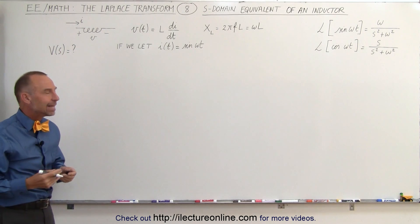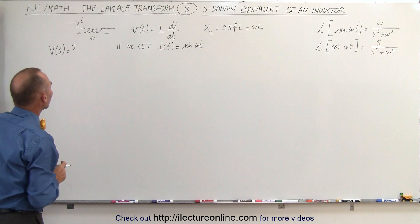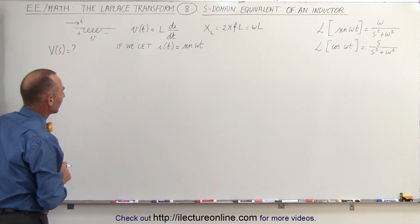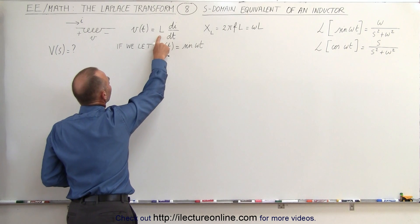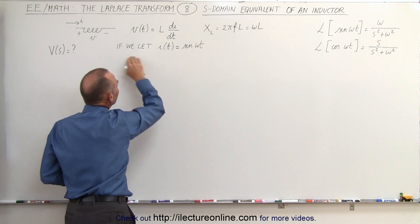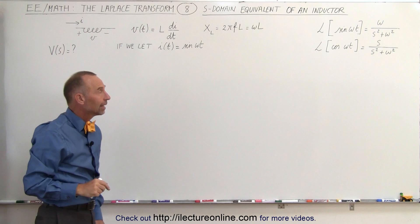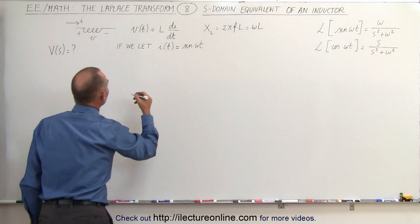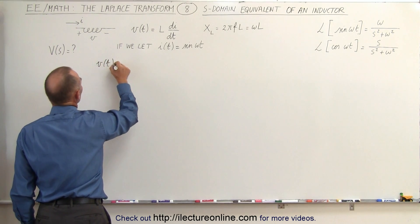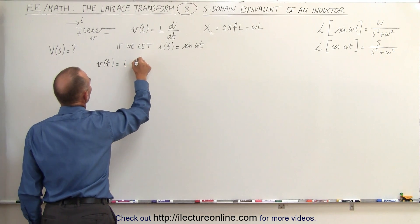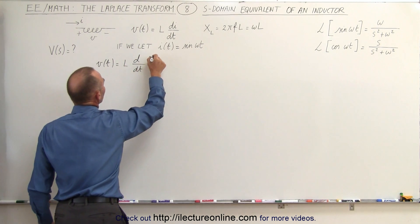So we're going to find the frequency domain of the voltage across the inductor. Since we have V(t) = L times di/dt, and if we let the current equal the sine of ωt, let's find out what V(t) would then be.